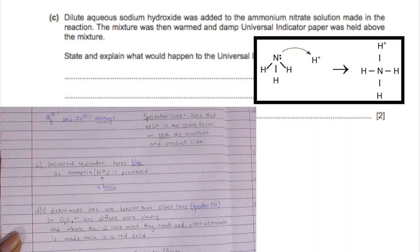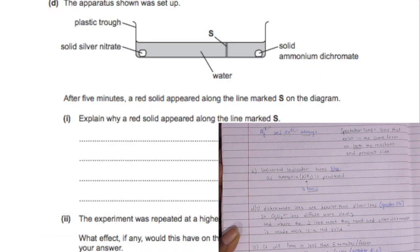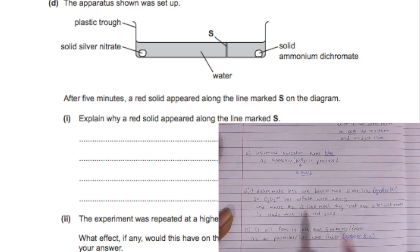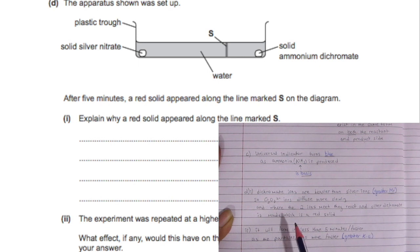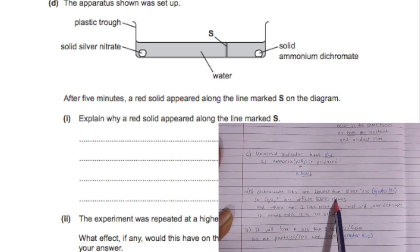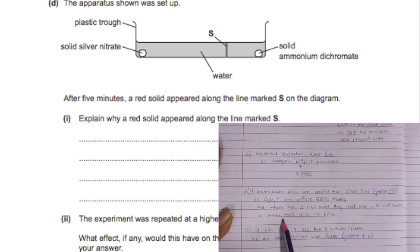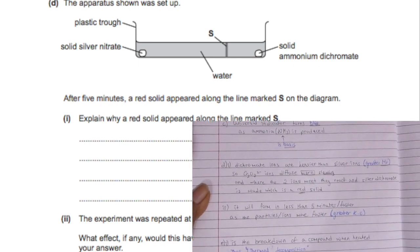Explain why a red solid appeared along the line marked S. The dichromate ions are heavier than the silver ions, so they have greater mass. The dichromate ions will diffuse or move more slowly. Where they meet is where the reaction occurs, and silver dichromate forms, which is a red solid.